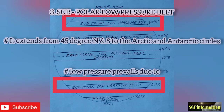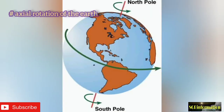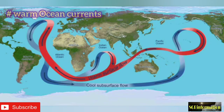Number three: subpolar low pressure belt. It extends from 45 degrees north and south to the Arctic and Antarctic circles. Low pressure prevails because axial rotation of the earth blows air away from the poles, and the effect of this rotation is felt near the Arctic and Antarctic circles, creating low pressure conditions. Warm ocean currents from tropical and subtropical areas carry heat to subpolar areas, creating higher temperatures and low pressure in this belt.